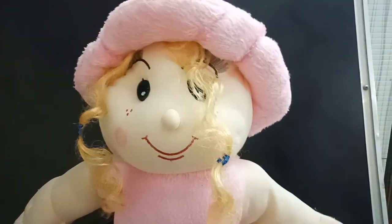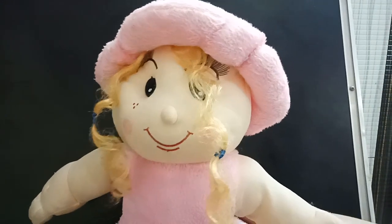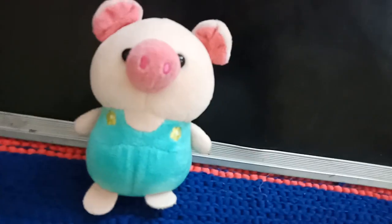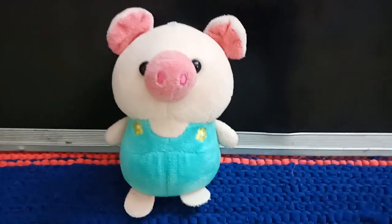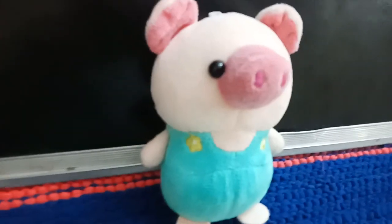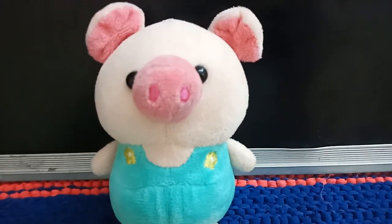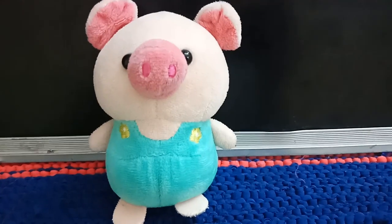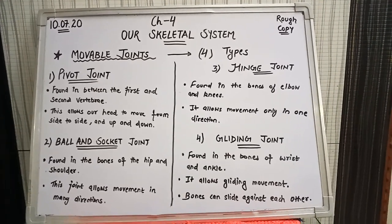In our previous video we discussed about joints, where you studied about two types of joints: first one was immovable joints and second one was movable joints. Today we will learn all types of movable joints. My friend Peppa will tell you about this. We are going to study four different types of movable joints, so let's get started.